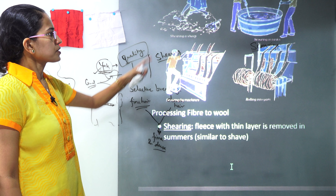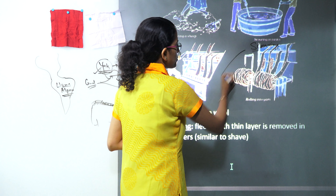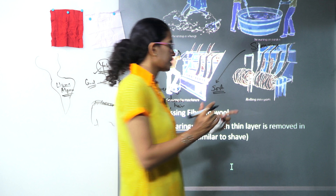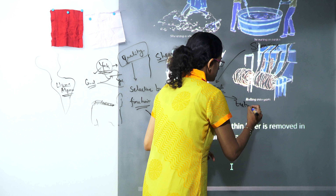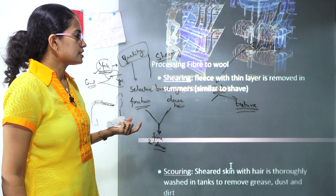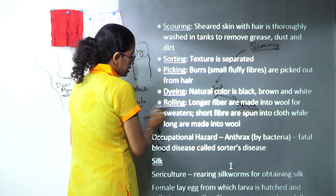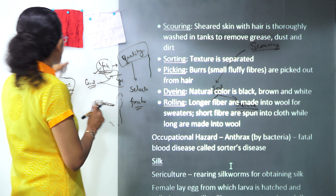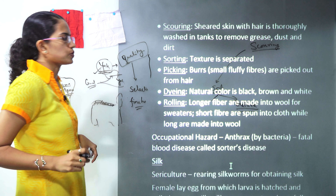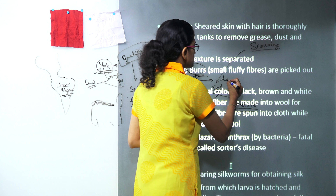After shearing and scouring, the next step is sorting out. You remove all impurities and sort different types of wool based on texture — separating good quality from other quality wool. Once sorting is done, the next step is picking. Small burrs — those small white rolls that come onto a sweater when you wash it constantly — and other impurities are removed by hand. It is a labor-intensive job which involves manual picking.